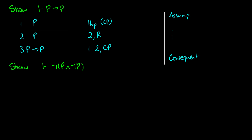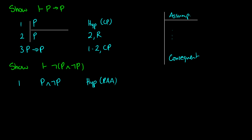Now let's prove ¬(P∧¬P). We can still use strategies here. To get ¬(P∧¬P), I'm going to assume P∧¬P and hope we can negate it with a contradiction. So in line 1 I'll assume P∧¬P as a hypothesis for contradiction. I want to show this gives us a contradiction so we can negate it, and we'll start that sub-proof here.